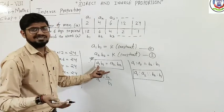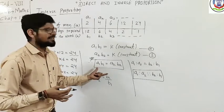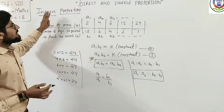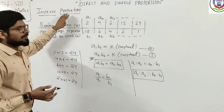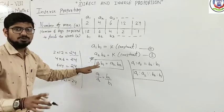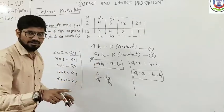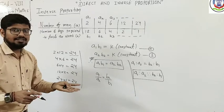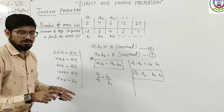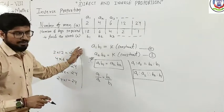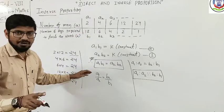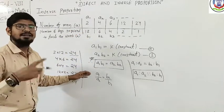In direct variation, the corresponding values of the ratio are the same. In inverse proportion, the corresponding values of the product are the same.